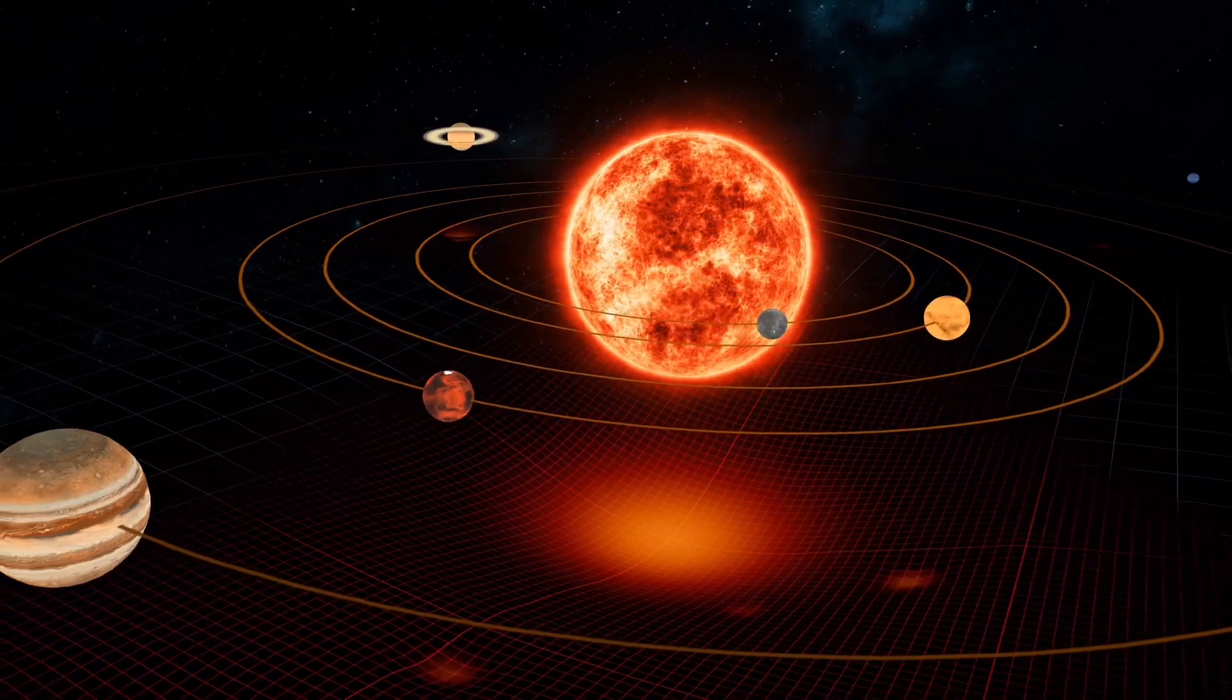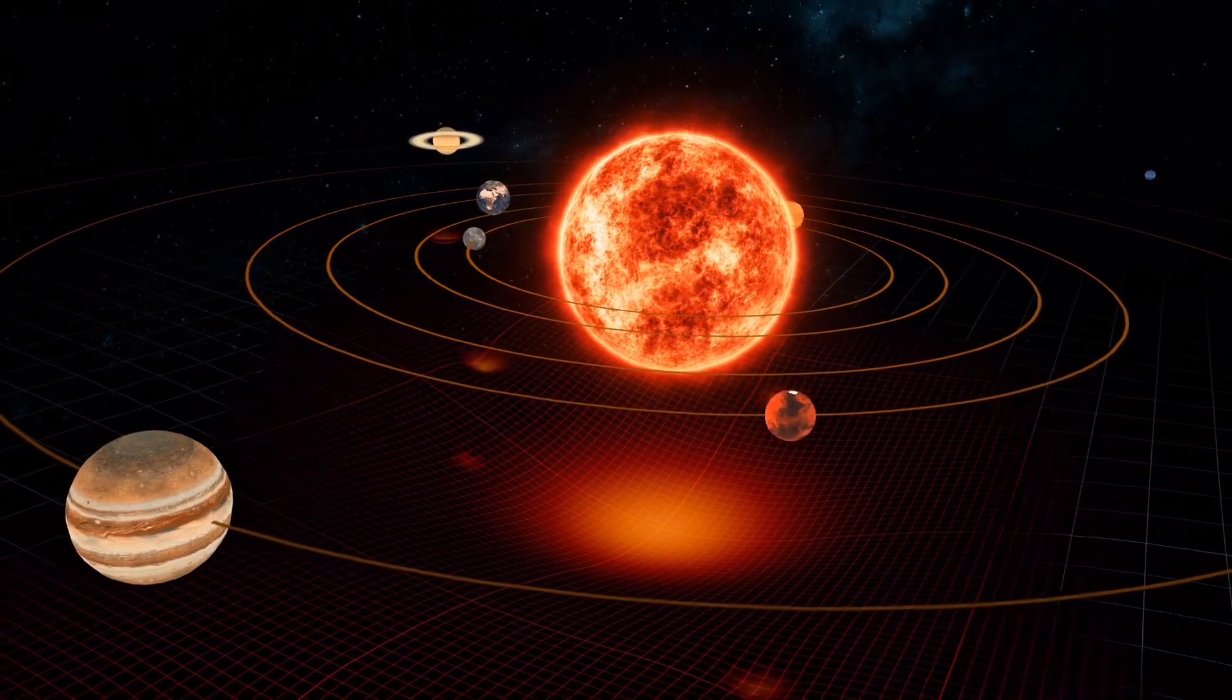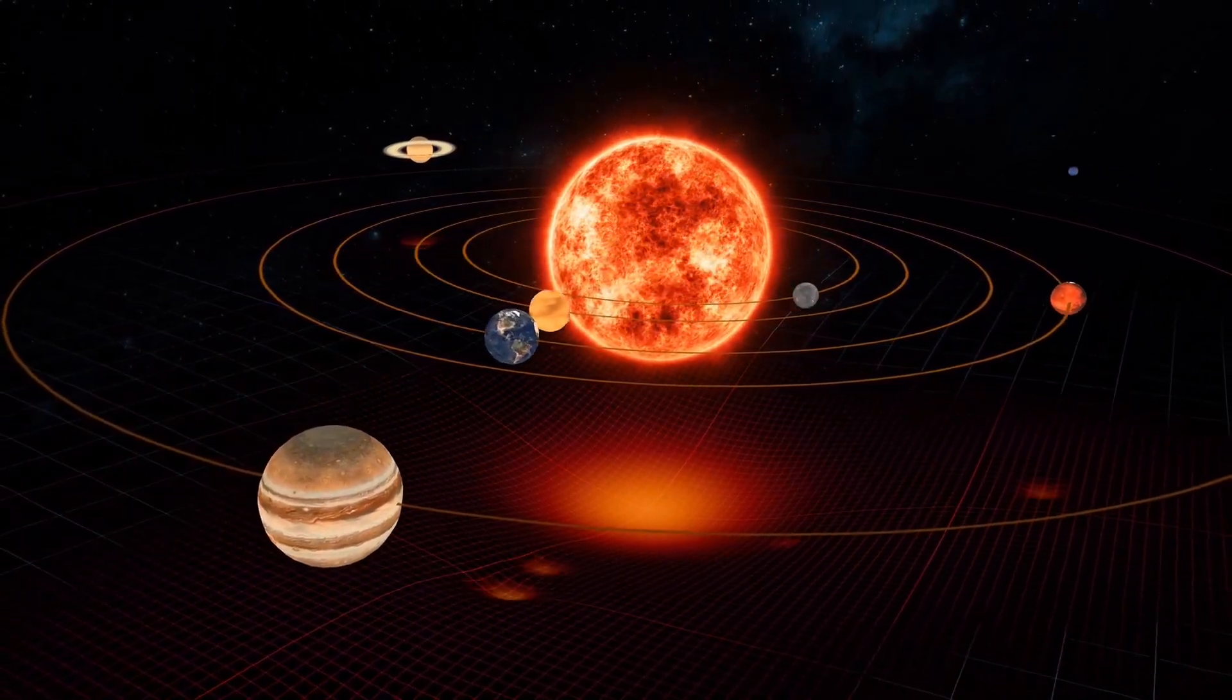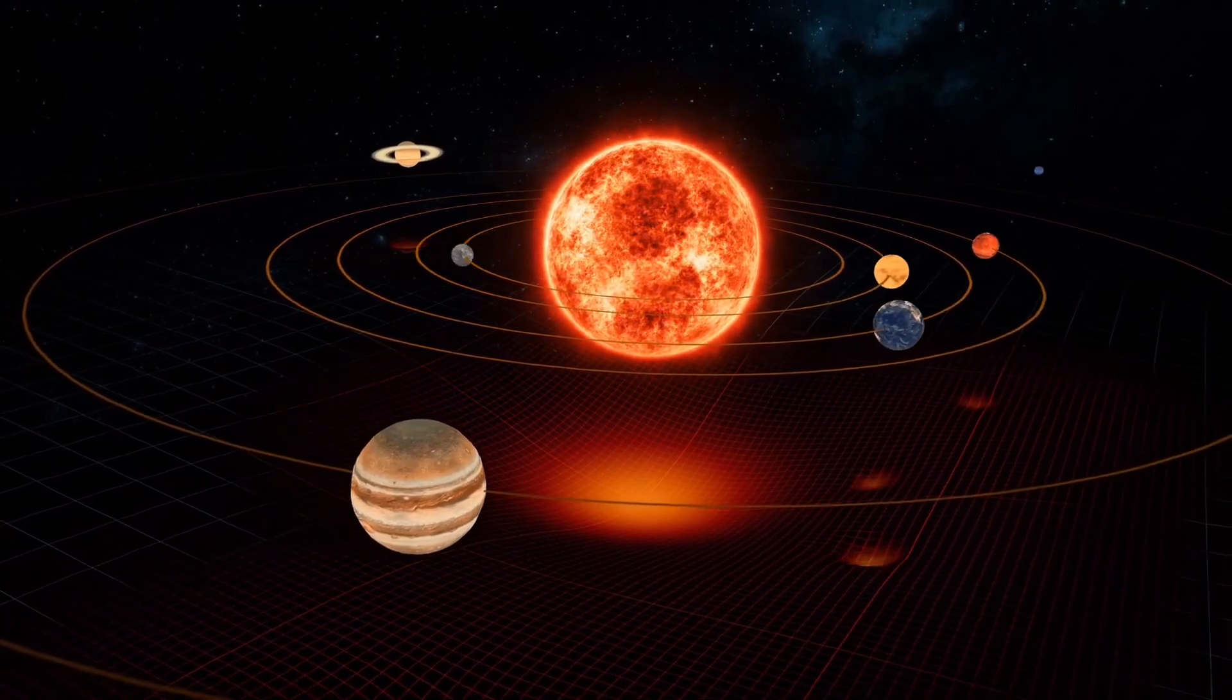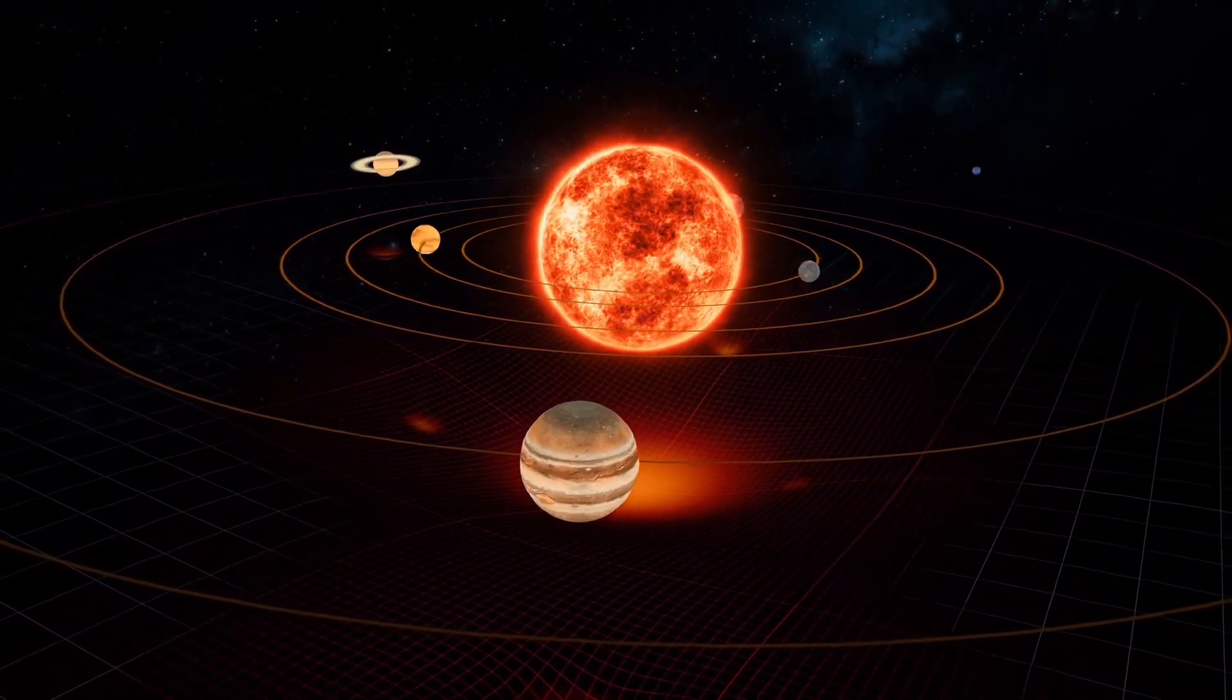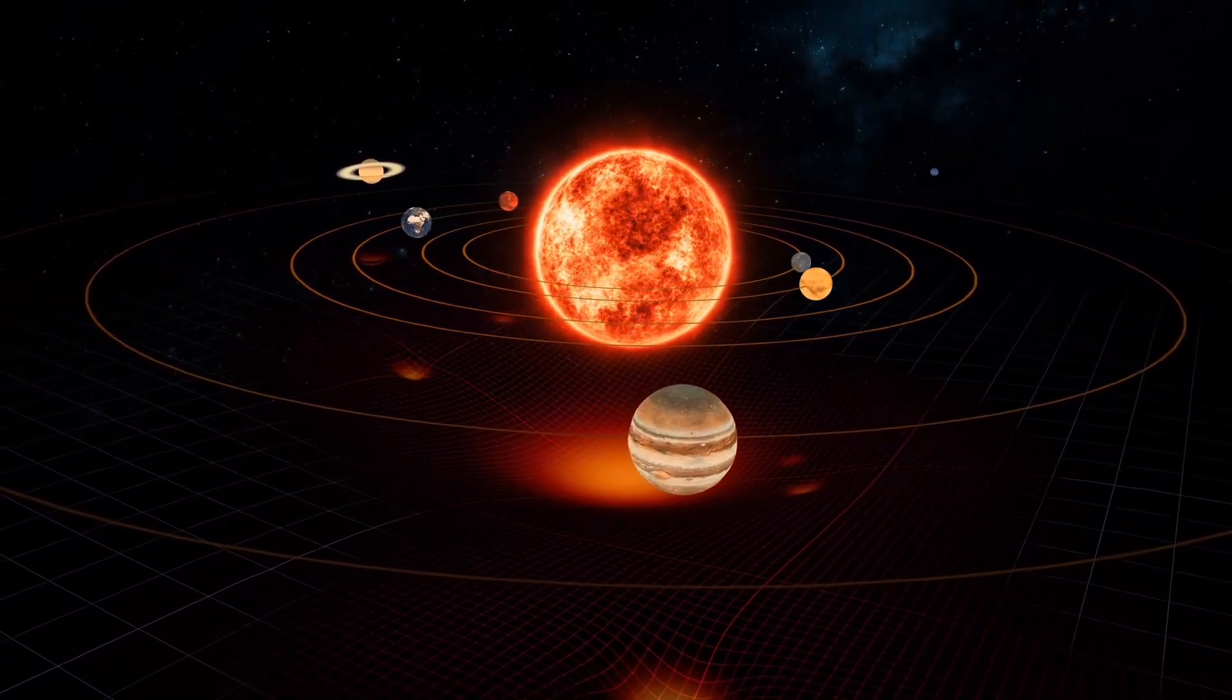The planets also move at different speeds in their orbits. Some planets, like Mercury, move faster and complete their orbit around the sun in shorter time. Other planets, like Neptune, move slower and take a longer time to complete their orbit.